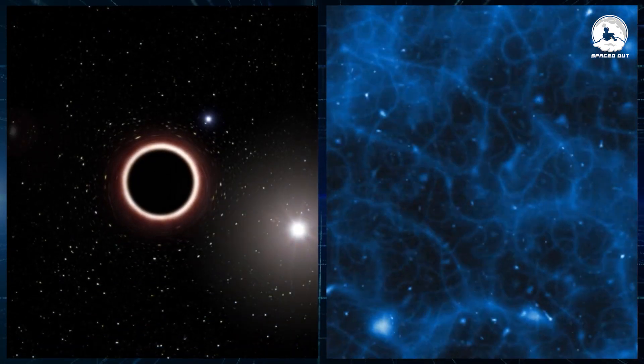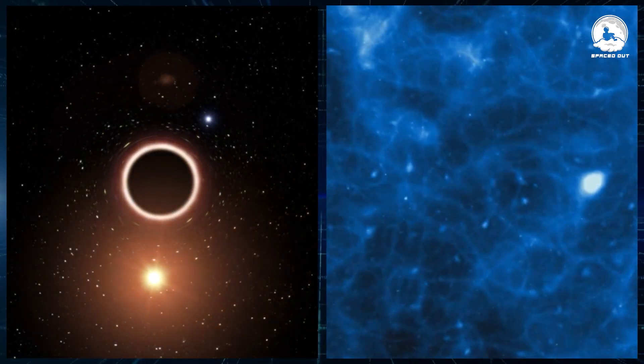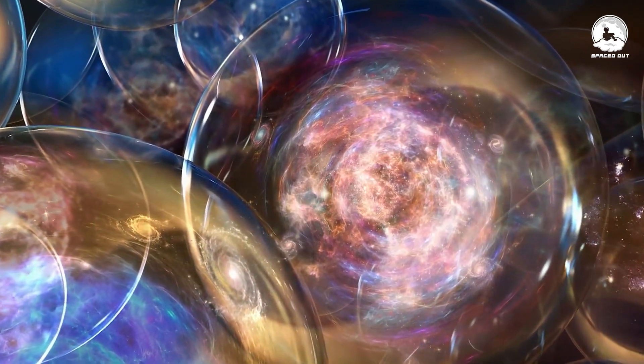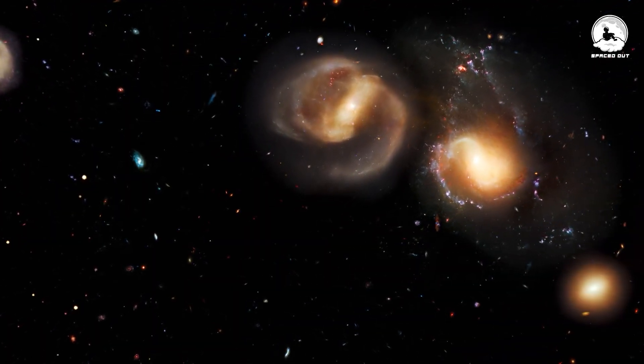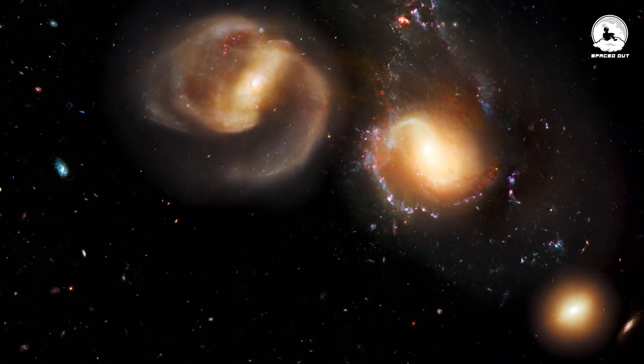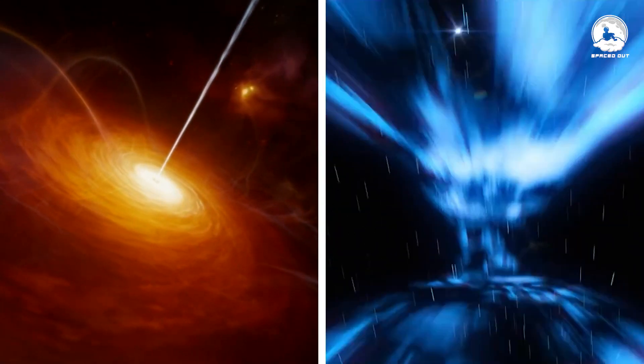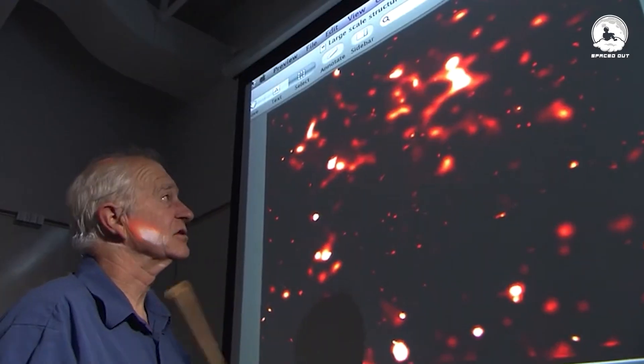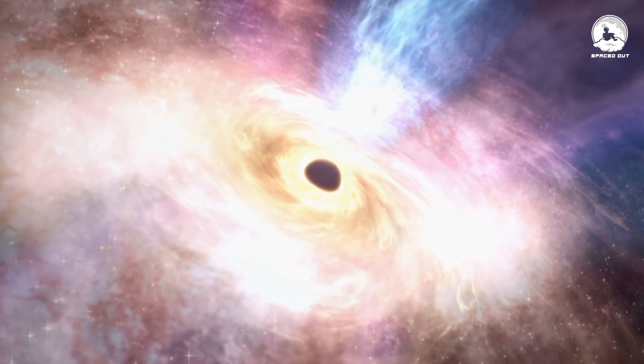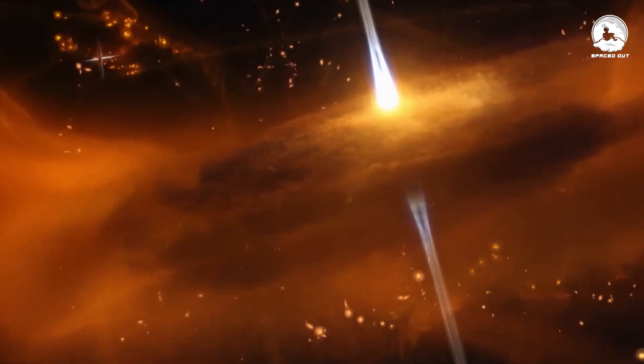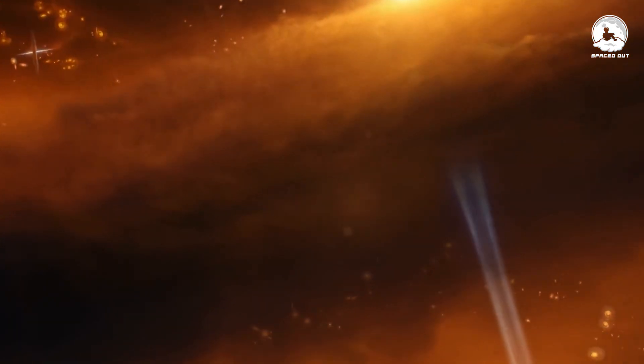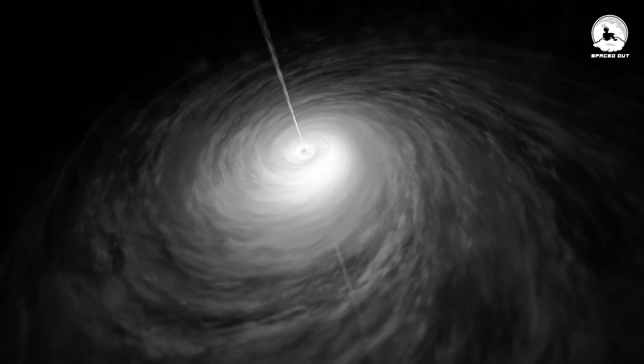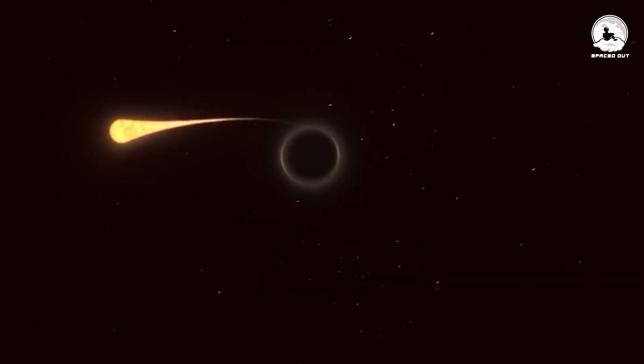If wormholes were indeed formed in the early universe, whether through cosmic strings or alternative mechanisms, they could be dispersed widely, awaiting discovery. It's conceivable that some might be much closer than we currently realize. From an external perspective, distinguishing between black holes and wormholes can be challenging, as they can exhibit similar characteristics. Some physicists even propose that the supermassive black holes situated at the centers of galaxies might be disguised wormholes. While venturing all the way to the center of the Milky Way for confirmation is a formidable task, an equally challenging alternative exists, attempting to create a wormhole ourselves.